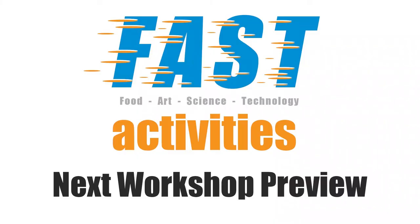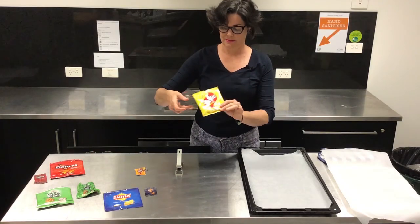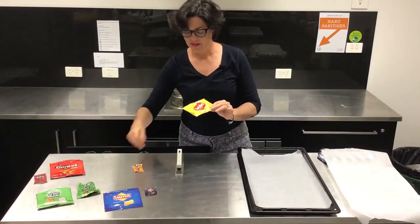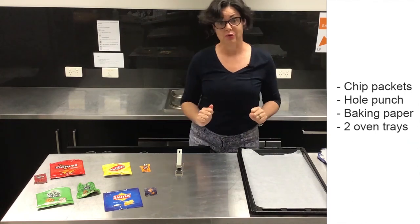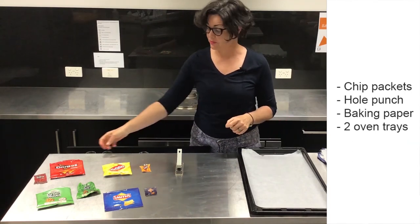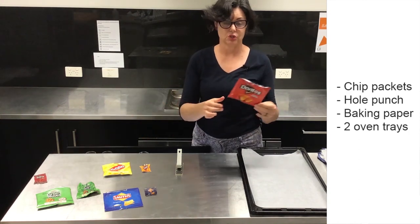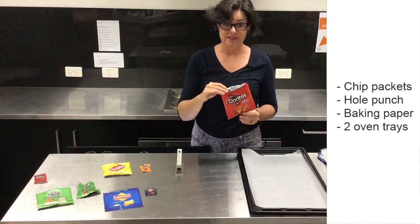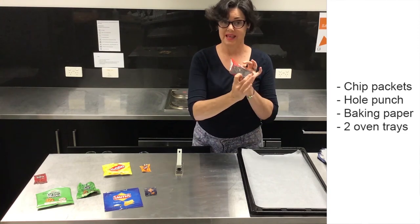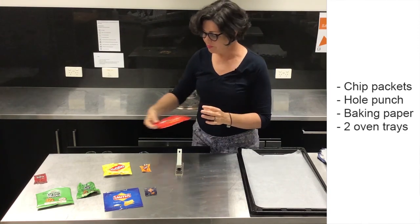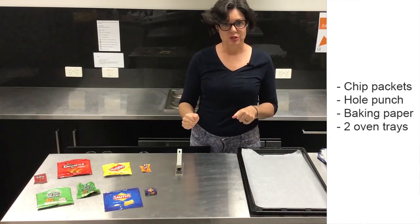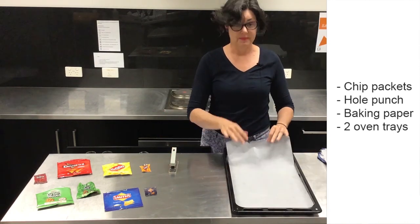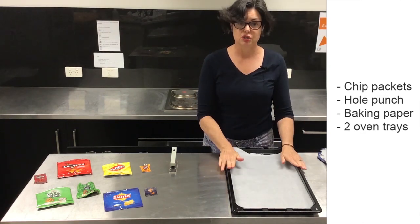Shrink chip packets to make miniature key rings. These are the things you're going to need to be able to make your key rings. First of all obviously you need some chip packets, and the first job is to eat the chips inside. Once you've done that, you're going to use a little bit of detergent and water and clean all of the crumbs out and let the chip packets dry. Other things you're going to need to make your key rings include a hole punch. You'll also need some baking paper and you will need two oven pans.